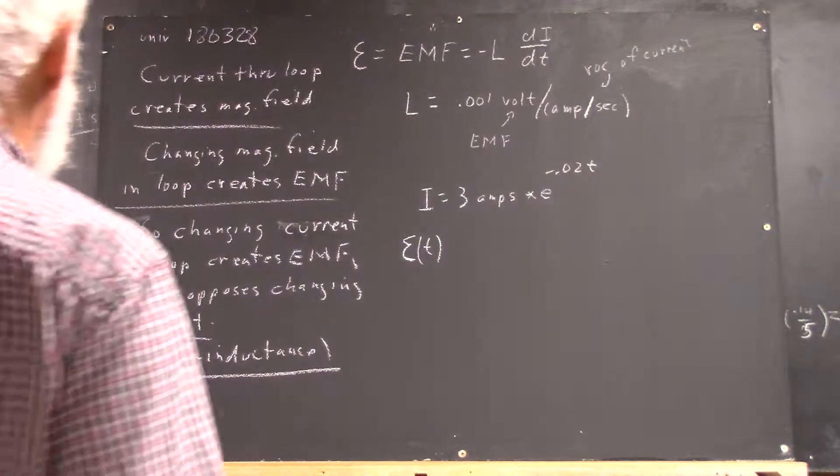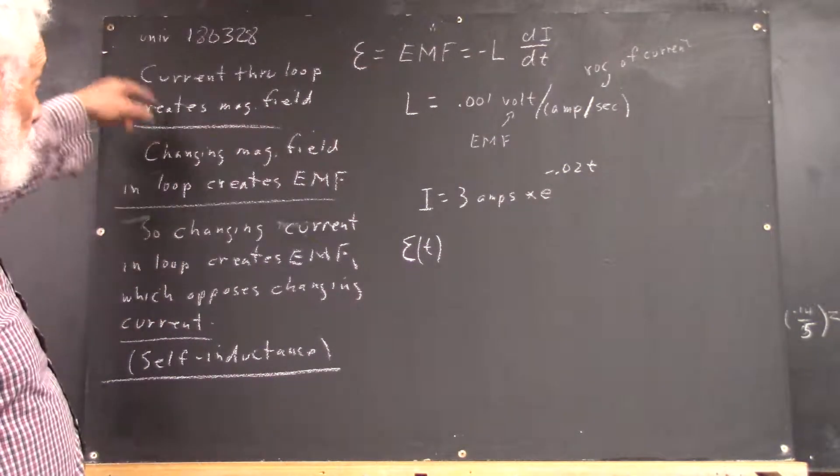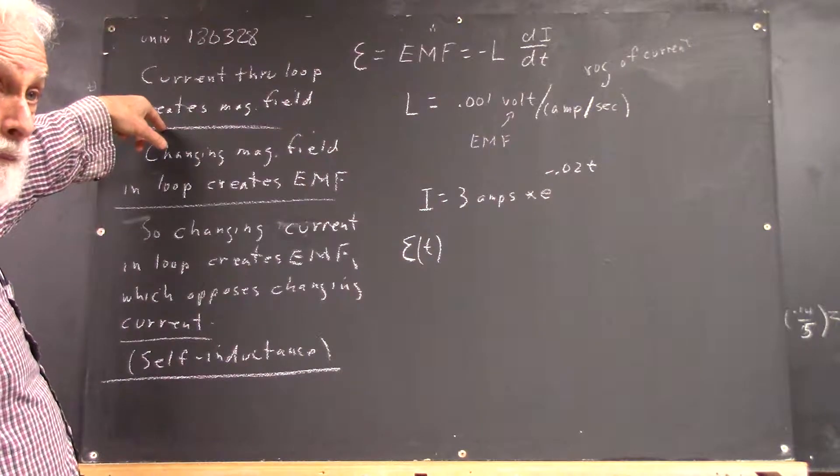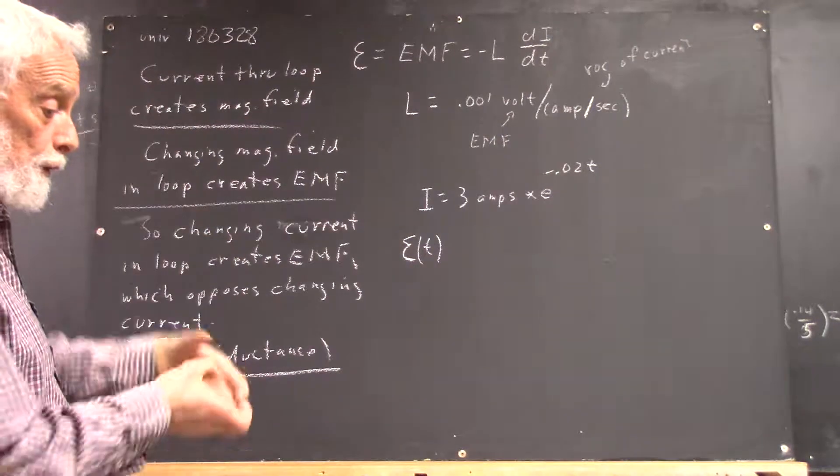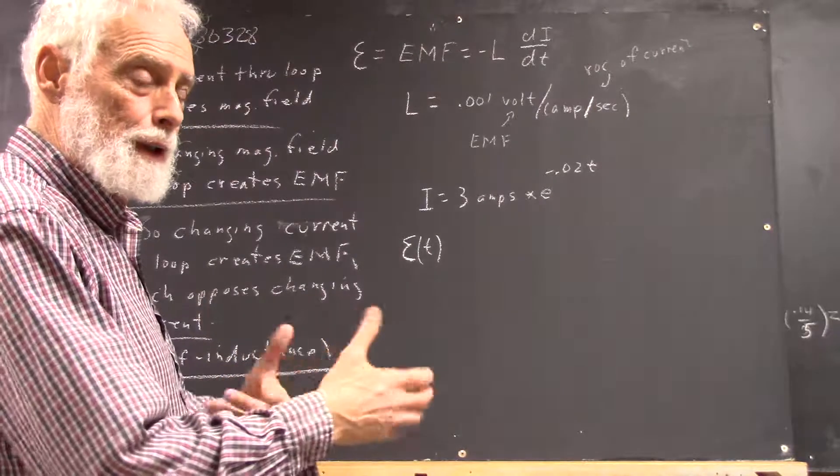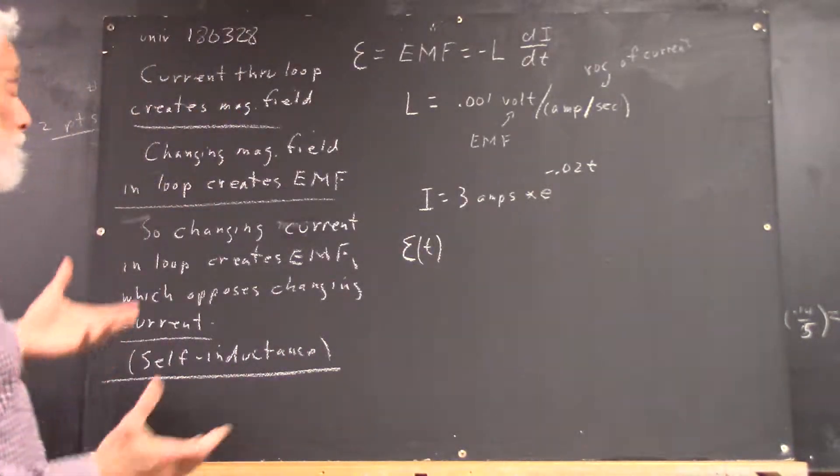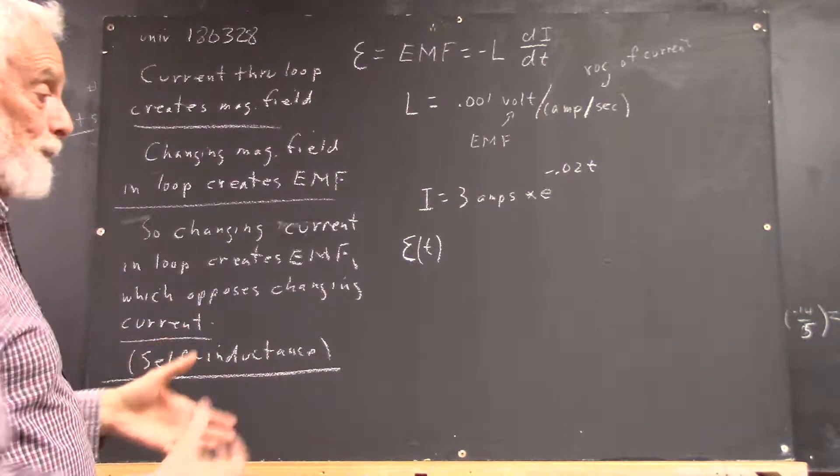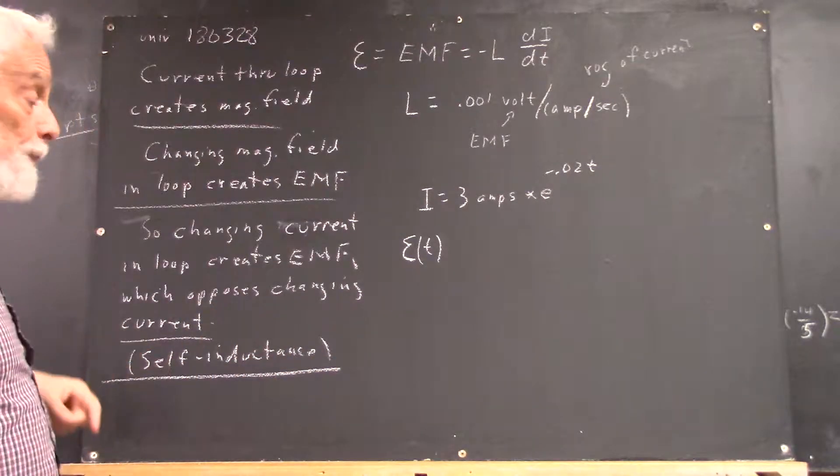Okay, so again, we've observed in lab that a current through a loop creates a magnetic field. Take a coil, run a current through it, and it creates something that magnets respond to. Compasses and magnetic substances respond to it.